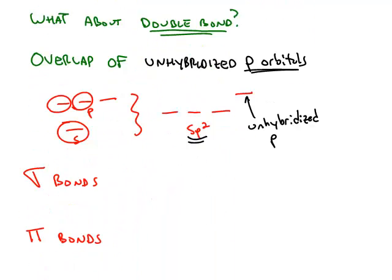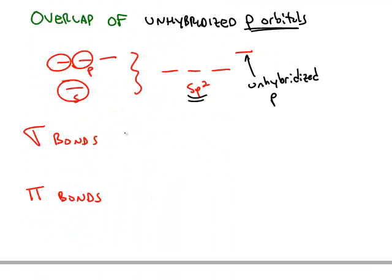The first bond that's made between two atoms is called a sigma bond. And the sigma bond is sigma because it's along the internuclear axis.